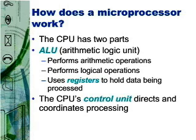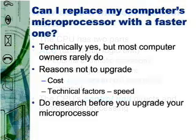Cache is sometimes called RAM cache or cache memory. It's a special high-speed memory that allows a microprocessor to access data more rapidly than from memory located elsewhere on the system board. Some computer ads specify cache type and capacity. A level 1 cache, or L1, is built into the microprocessor chip, whereas a level 2 cache, or L2, is located on a separate chip and takes a little more time to get data to the processor.